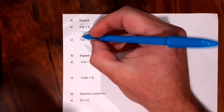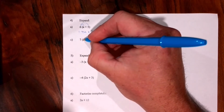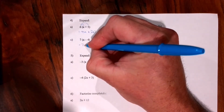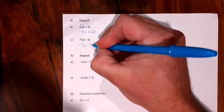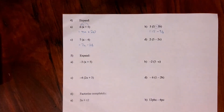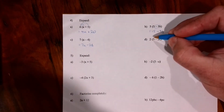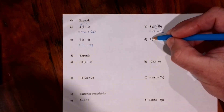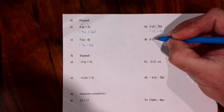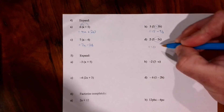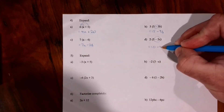Question 4c: that times that, then that times that. So 7 times a makes 7a, and 7 times negative 4 makes minus 28. Question 4d: when expanding, 2 times 5 makes 10, and 2 times minus 2c makes minus 4c — not forgetting the negative goes with that term.